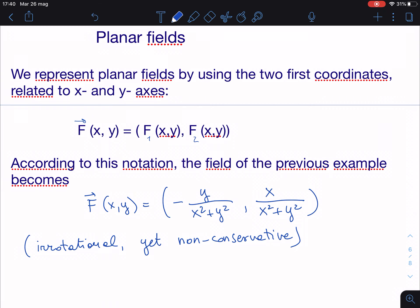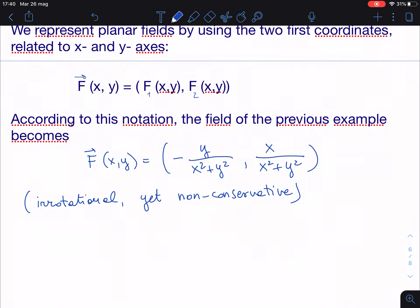And also recall that what I told you when introducing this example was that the domain of F was all points in the space except where this denominator was going to zero, which means x equal to y equal to zero. x equal to y equal to zero is the z-axis in the three-dimensional space, but in the two-dimensional space is the origin only. So the domain of F as a planar field is R² minus the origin (0,0).